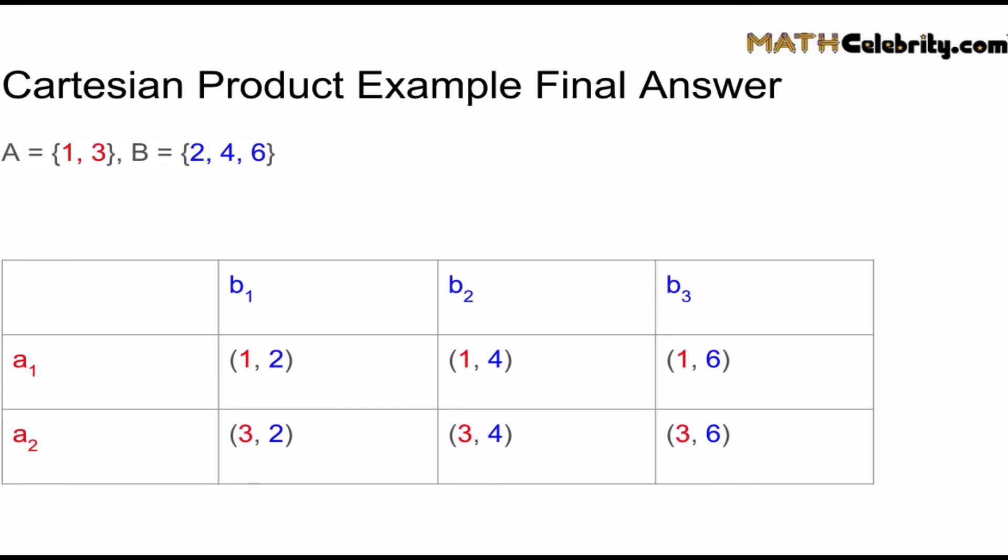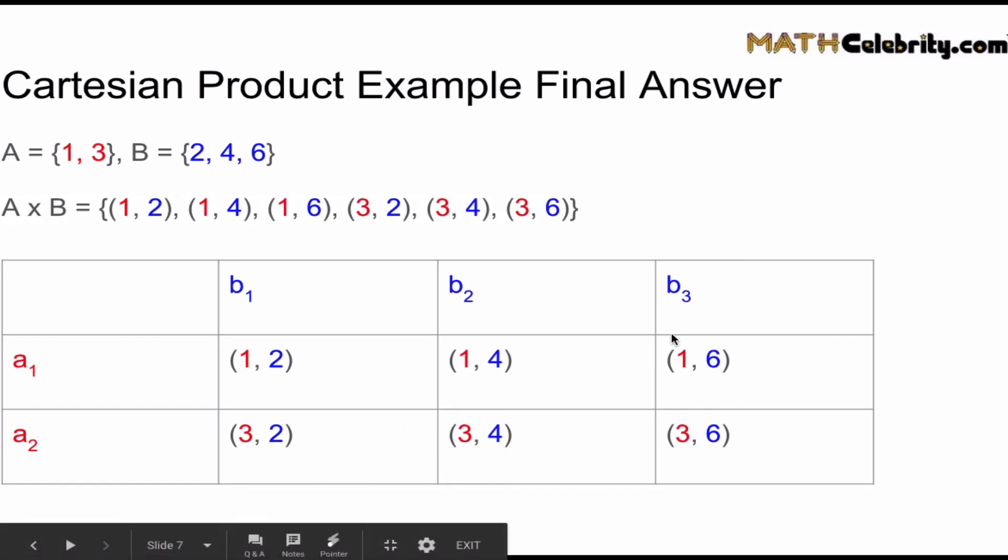Once you have your ordered pairs, you list out your Cartesian product in this format. We use the set brace, list every single ordered pair that we came up with—in this case there were six—so we did one, two, three, four, five, six, and we close the set notation with the right brace.